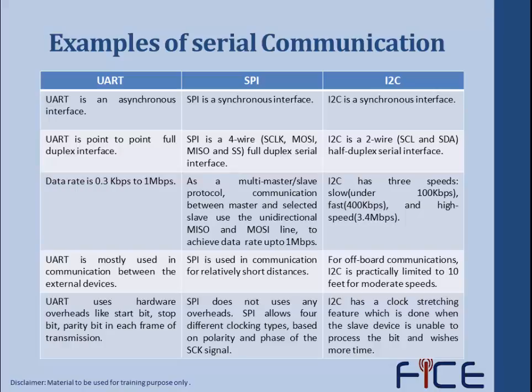UART is a point-to-point, full duplex interface. SPI is a four-wire full duplex serial interface — the four wires being SCLK (clock), MOSI (Master Out Slave In), MISO (Master In Slave Out), and SS (Slave Select). SPI uses a master and slave configuration: MOSI carries data from master to slave, MISO carries data from slave to master, and SS allows the master to choose which slave to communicate with. I2C is a two-wire half duplex serial interface using SCL (clock) and SDA (data).